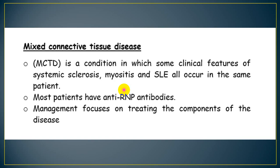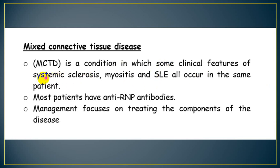Before finishing, we need to discuss a syndrome called mixed connective tissue disease. It is a combination of more than one connective tissue disease — a condition in which there are some clinical features of systemic sclerosis, plus myositis, plus SLE, all occurring in the same patient, but not necessarily the full picture of each — it could be a small number of features from each disease simultaneously.